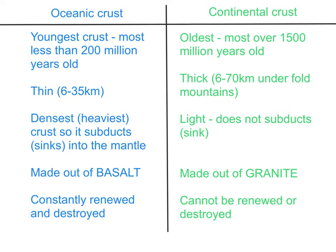Oceanic crust is constantly renewed at mid-oceanic ridges and destroyed at ocean trenches, whereas continental crust, once formed, cannot be renewed or destroyed.